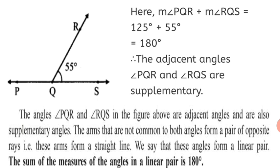Another way to identify them: since there are opposite rays and a common arm, the sum of the measures of the angles in a linear pair is always 180 degrees. We see adjacent angles, supplementary angles, and opposite rays — a combination of all three makes up angles in a linear pair.